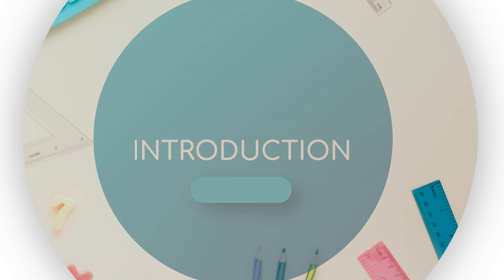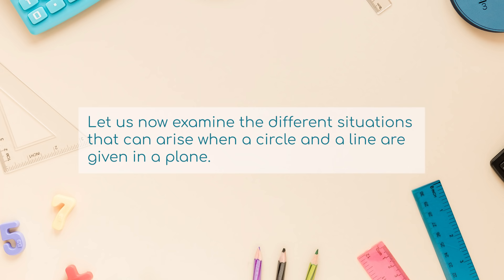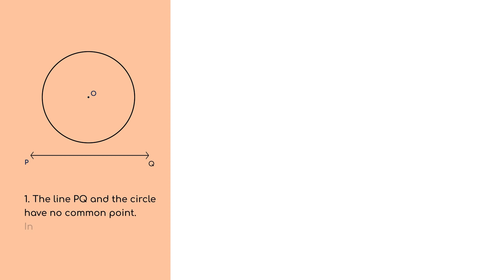Introduction. Let us now examine the different situations that can arise when a circle and a line are given in a plane. There can be three possibilities. 1. The line PQ and the circle have no common point. In this case, PQ is called a non-intersecting line with respect to the circle.